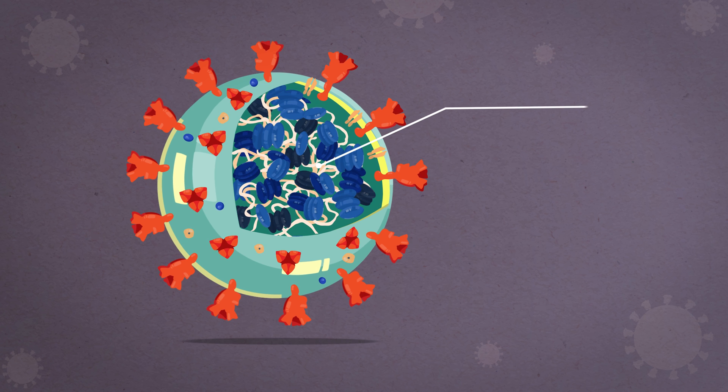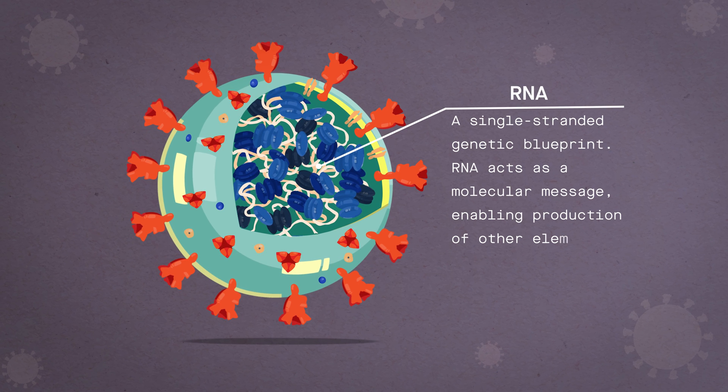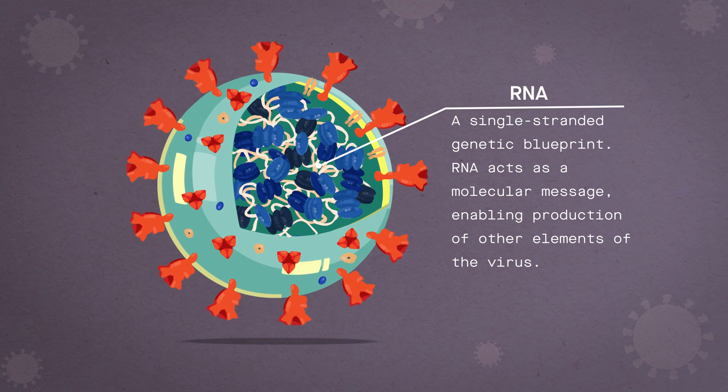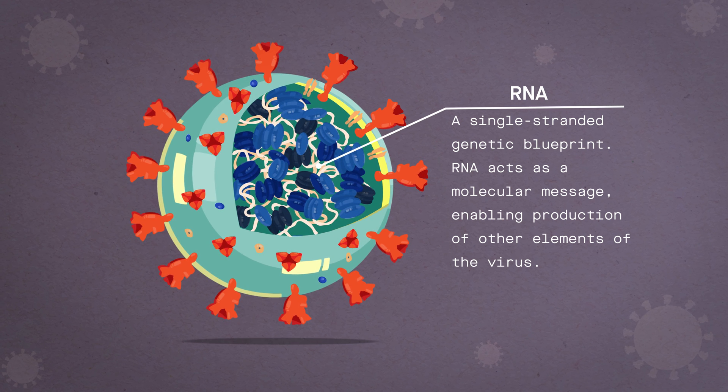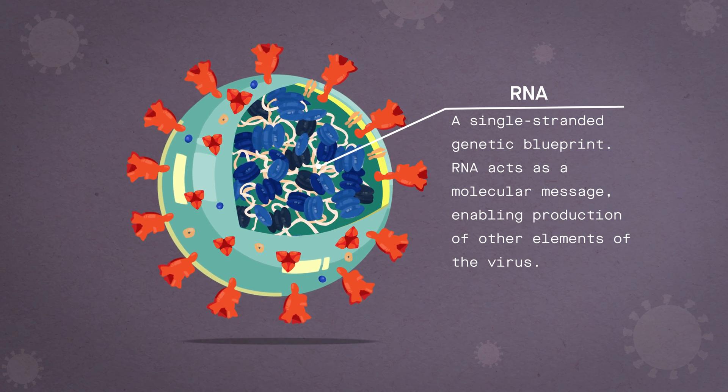At their core, coronaviruses contain a genetic blueprint called RNA, similar to DNA. The single-stranded RNA acts as a molecular message that enables production of proteins needed for other elements of the virus.